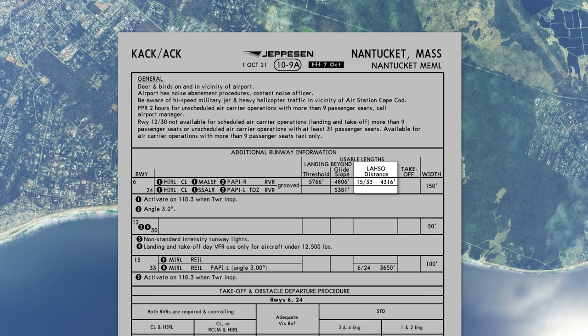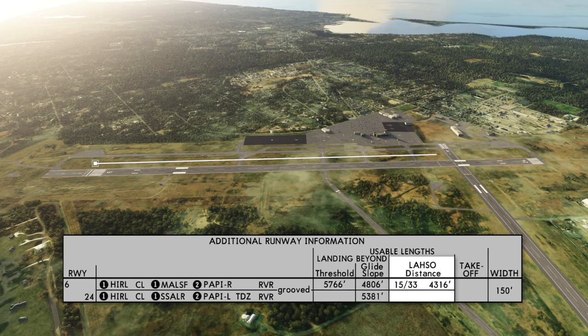Remember the word LAHSO — land and hold short. Number seven gives you that distance: the distance from the end of the runway to the LAHSO point where you must stop your aircraft.